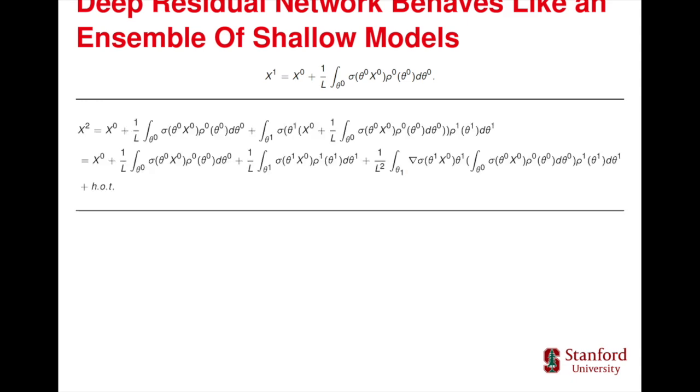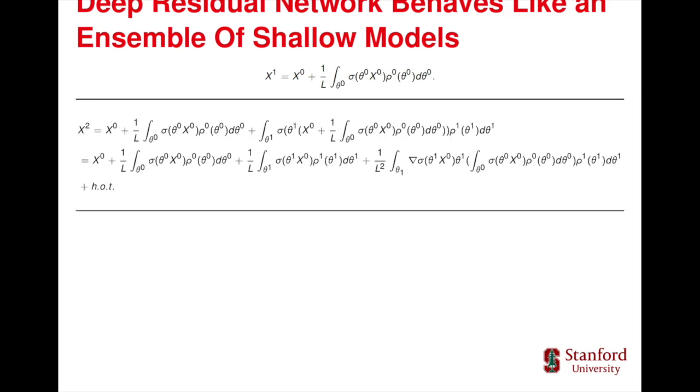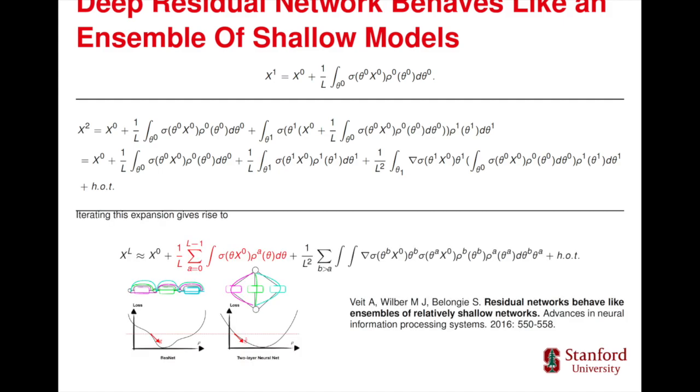The first residual block is formulated as this. By Taylor expansion, the second layer output is given by this one. Iterating this expansion gives rise to the following formula. We can see that the leading term here is the ensemble of the shallow models. The higher order terms decay as the magnitude of inverse of the factorial.